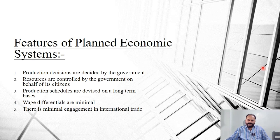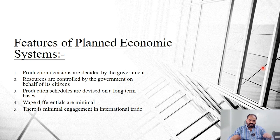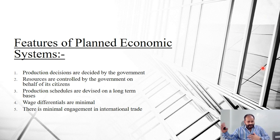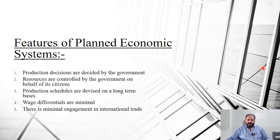The next economic system is planned economy, also known as command economy. It is absolutely opposite to market economy. In a planned economy, all the resources that are allocated are owned and controlled by the government. There is very minimal control with the private sector — most or all control is with the public sector, meaning the government.